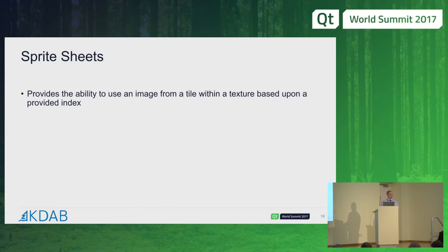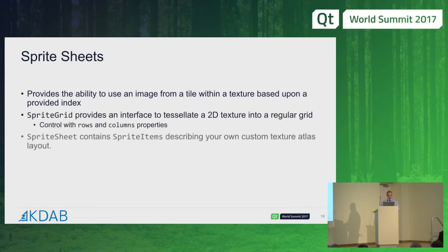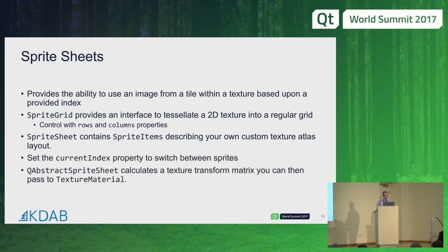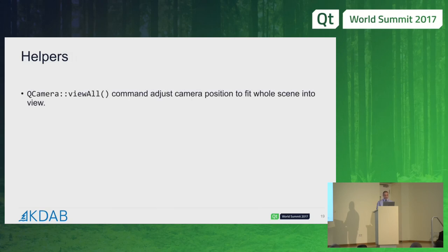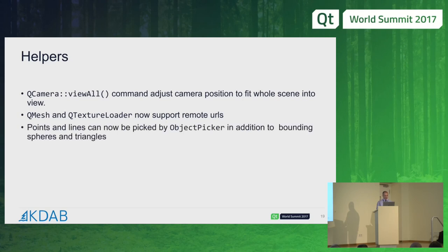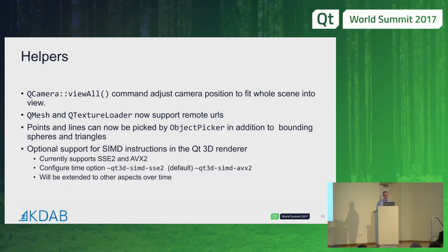There are also sprite sheets, which basically allow you to step through sub-images of a big texture as a function of time. SpriteGrid and SpriteSheet allow you to define either a regular grid or your own layout of items inside your texture atlas. You can change the index and it will automatically swap which part of the texture you're displaying. Other helpers include QCameraViewAll to view the whole scene easily, mesh and texture load now support remote URLs as well as local files, points and lines can be picked by object picker, and there are whole bunch of optimizations including work on using SIMD instructions in the renderer for a nice speed-up factor in lots of operations.